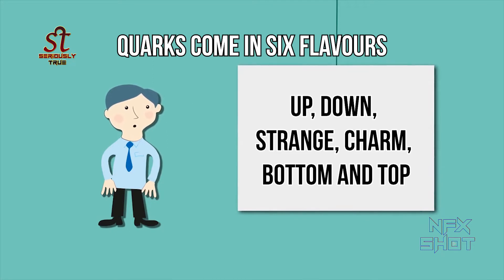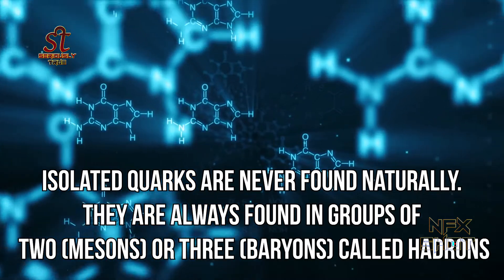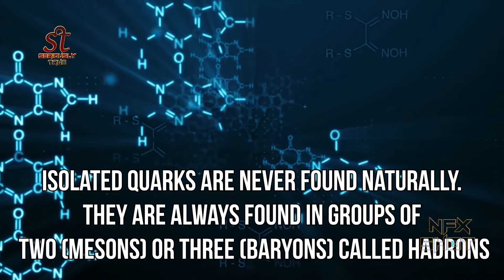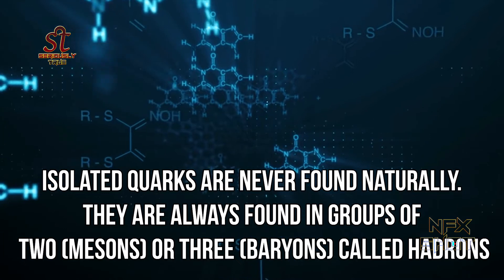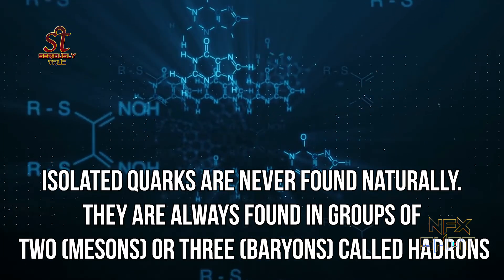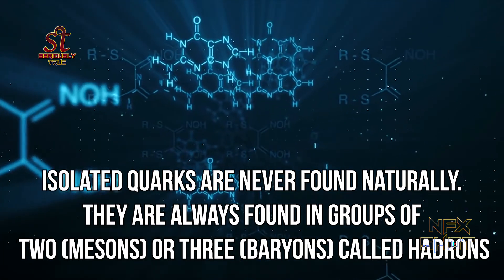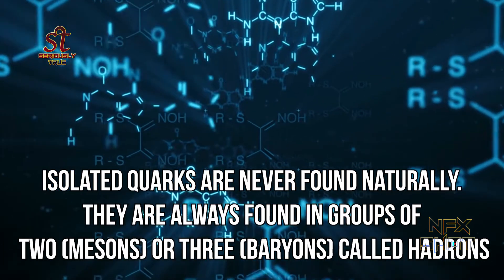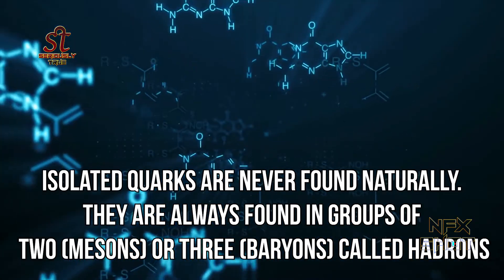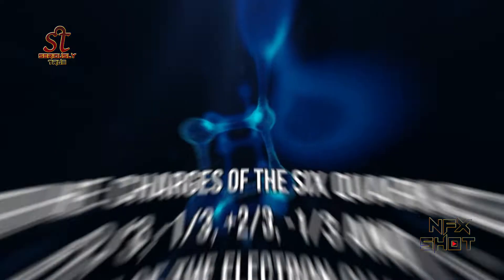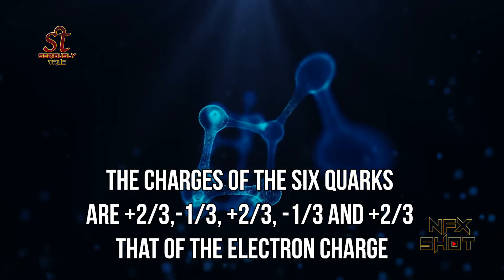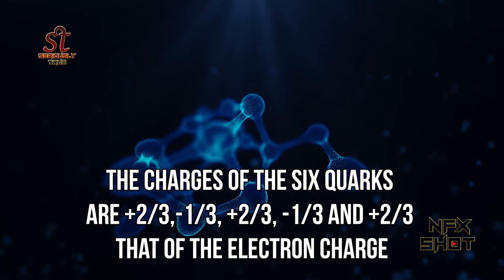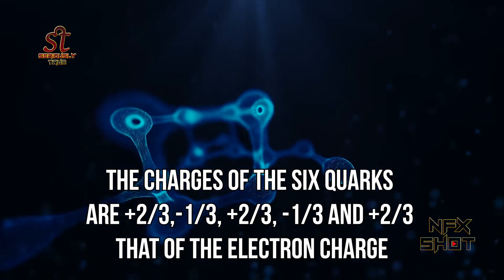bottom, and top. Isolated quarks are never found naturally — they are always found in groups of two, called mesons, or three, called baryons. Together these groups are called hadrons. The charges of the six quarks are +2/3, −1/3, +2/3, −1/3,